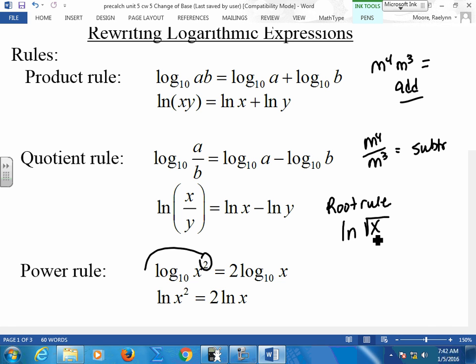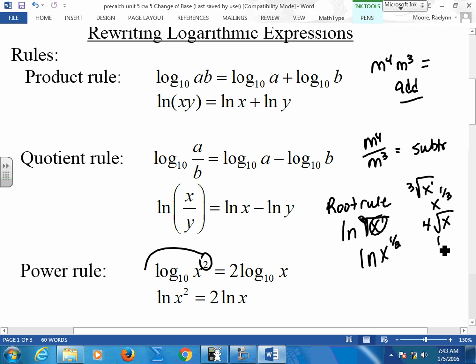You add them. So logs have the same rules. When you're multiplying, you're going to turn it into an add. When you're dividing, what do you do to your exponents when you divide like variables? You subtract. So when you have a quotient, you're going to turn it into a subtract. And your power rule is the one we probably use the most. It's to get this exponent down. And we bring it out in front.